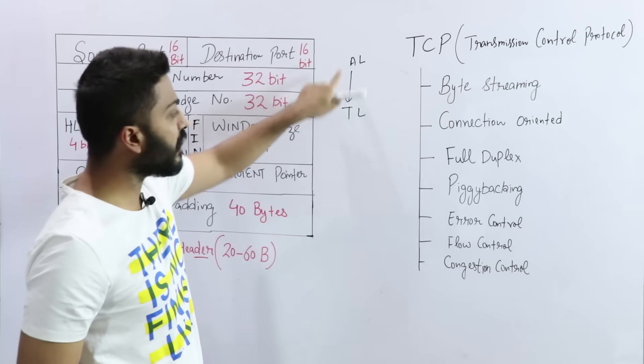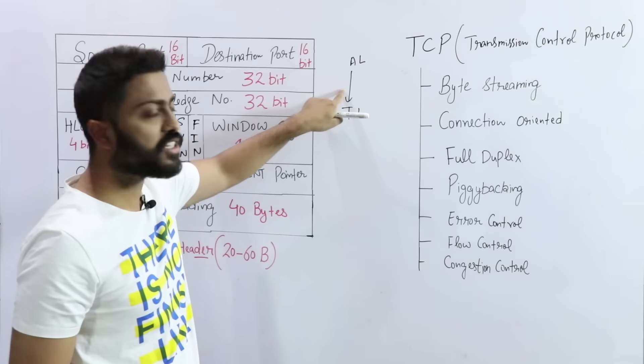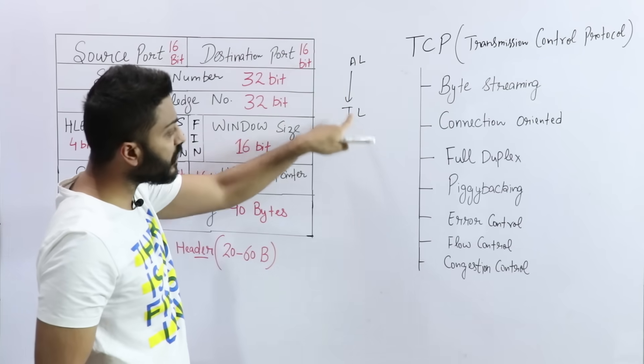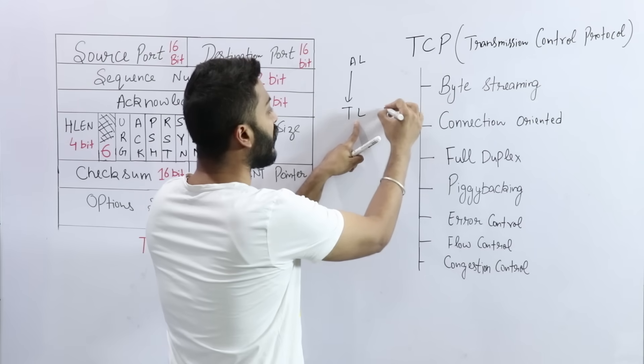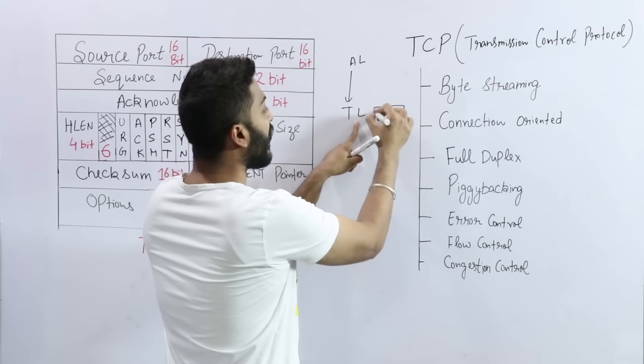Application layer data comes to the transport layer through presentation and session layer. Application layer data, when we have at transport layer, we have a header added.